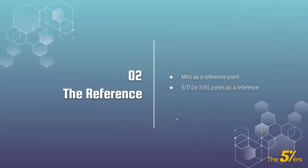That was a quick overview of the spinning top pattern. Now let's talk about the second part: references. Two possible references are moving averages, and of course supply and demand zones or support and resistance zones.